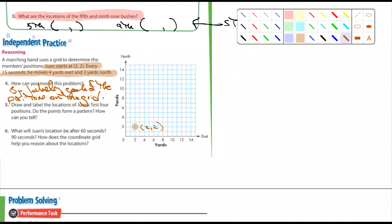Number 5, it says, draw and label the locations of Juan's first four positions. Well, that's very similar to the one we just did. Because they wanted you to label the first four rose bushes. So, draw and label the locations of the first four positions. Do the points form a pattern? Answer that question. How can you tell? Well, again, just like I said a couple minutes ago, if you're doing a visual representation of his positions, let's say it's like this. When we're done, let's say it looks like this. Is that a pattern? No. No, that's not a pattern. What if they look like this? Is that a pattern? Yeah, of course. It's in a line. So, that would be a pattern. It would be linear. All right. So, answer those questions. Do the points form a pattern? Yes or no? How can you tell? And again, you can tell just by looking at the grid when you're done labeling them.